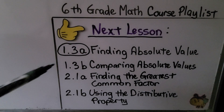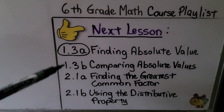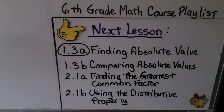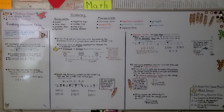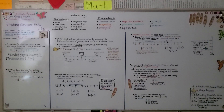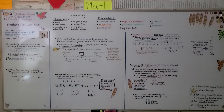In our next lesson, 1.3b, we're going to be comparing absolute values. I really hope this lesson made sense and that you now understand absolute value is just how many jumps a number is from zero. Hit that like button if you understood — it helps the channel. See you next time. Bye!